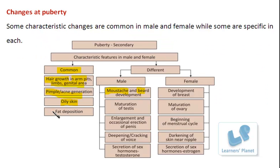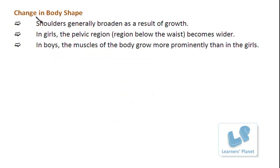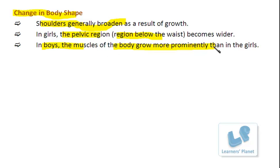The next feature is fat deposition, which brings changes in body shape. Shoulders generally get broadened as a result of this secondary growth. In the case of girls, the pelvic region — that is, the region below the waist — becomes wider. In the case of boys, the muscles of the body grow more prominently than in girls.